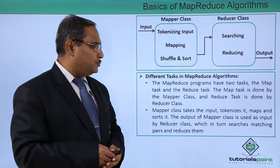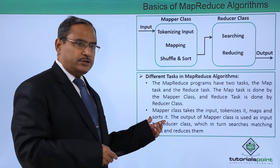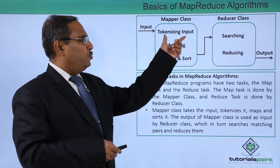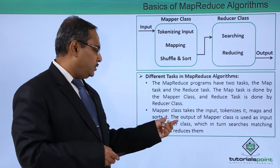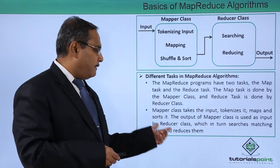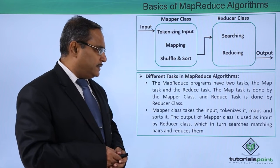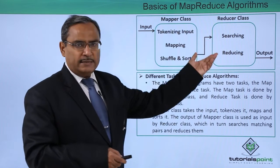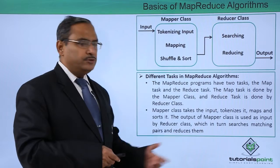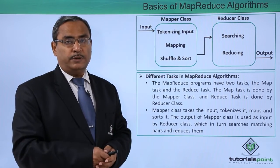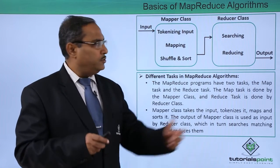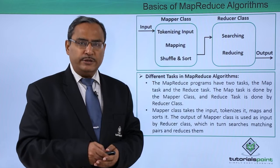The mapper class takes an input, tokenizes it, maps and sorts it. The output of the mapper class is used as input to the reducer class, which in turn searches for matching pairs and reduces them according to the business logic. Whatever output is required, a respective customized function works at the reducer class for the reducing operation.